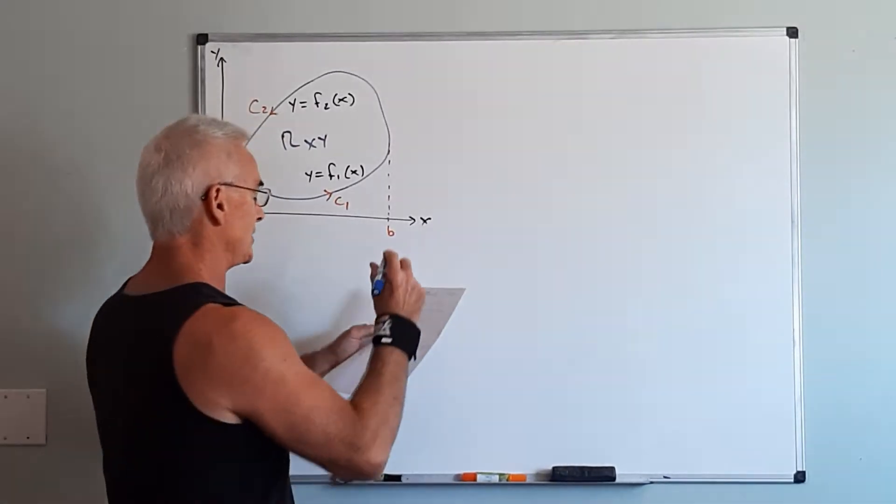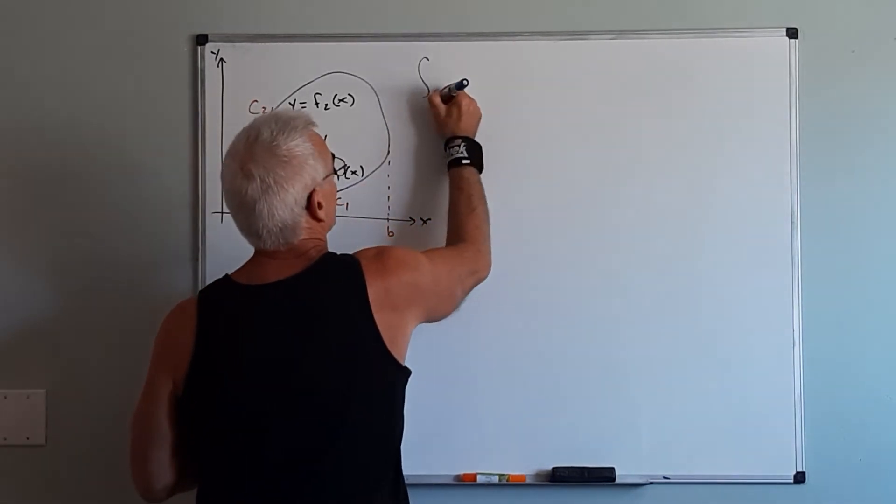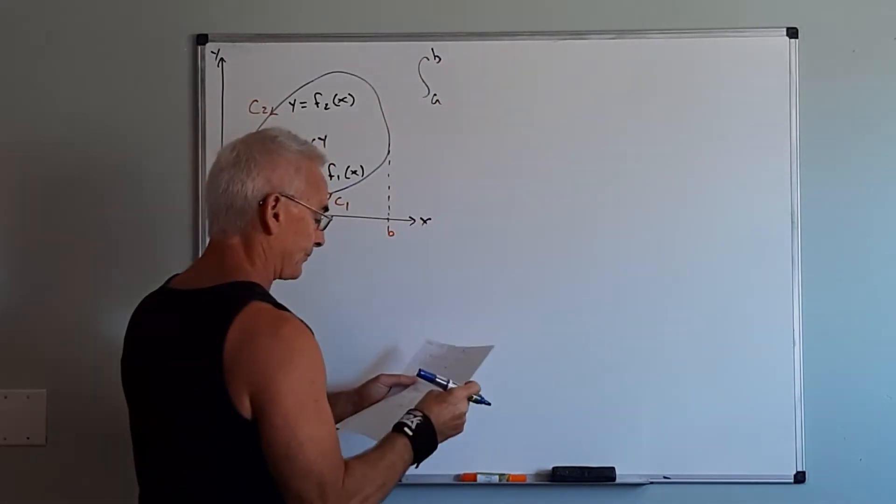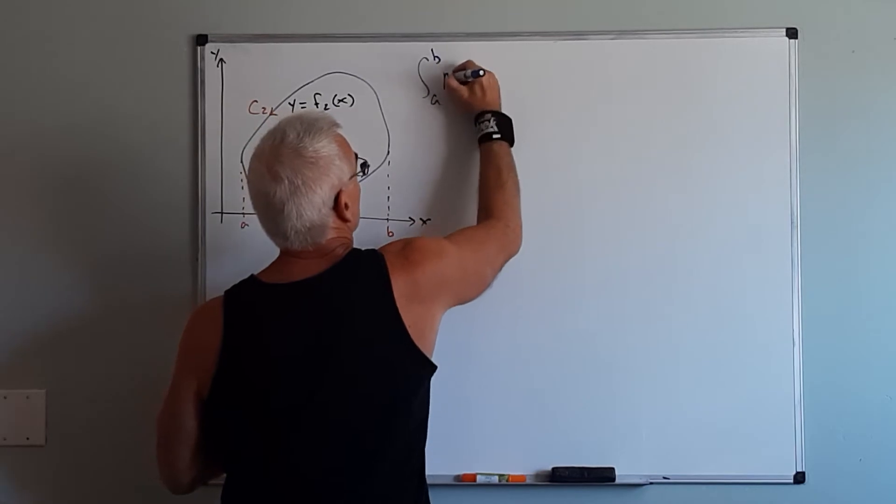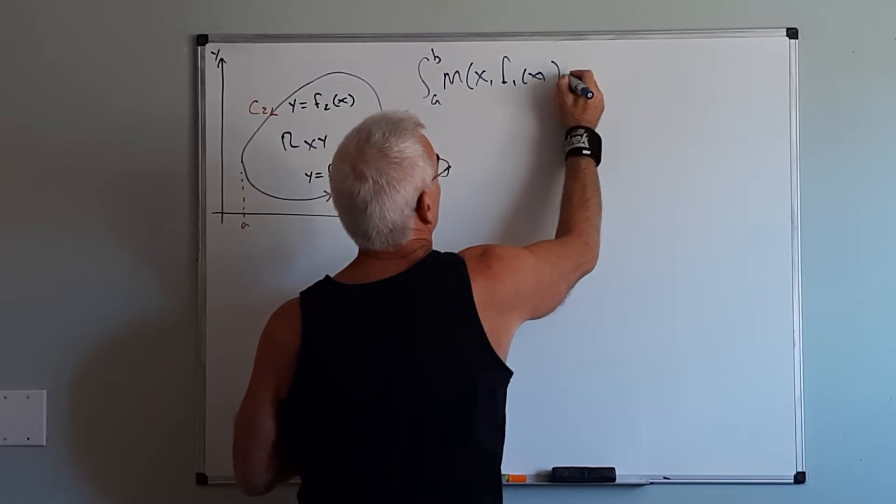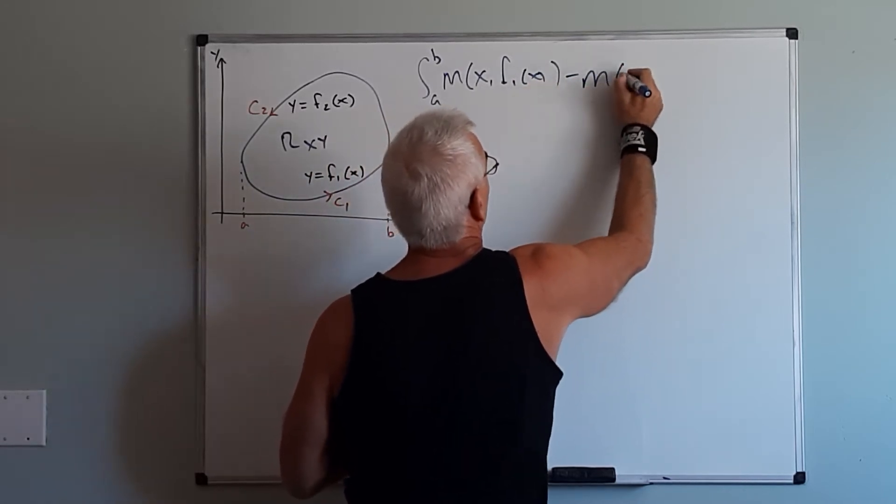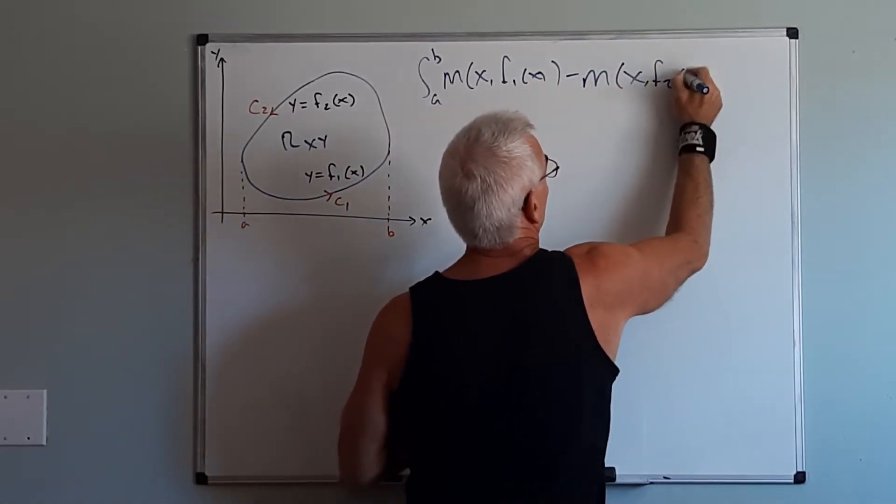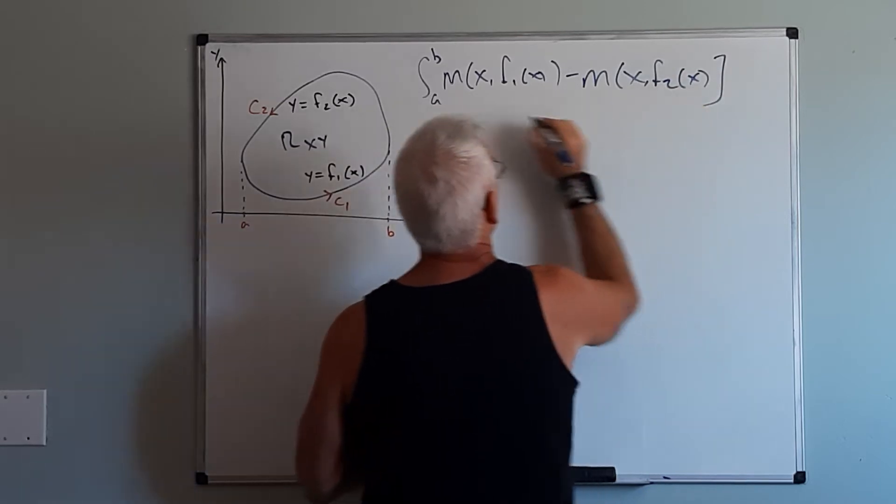Now continuing we can make this into one integral from a to b of m of x,f1 of x minus m of x,f2 of x dx.